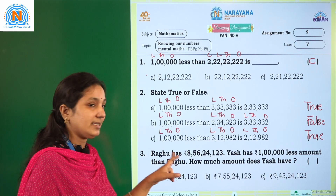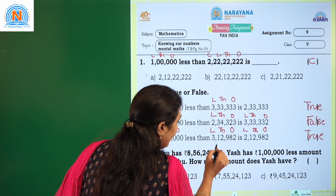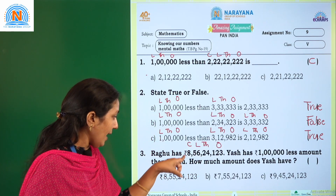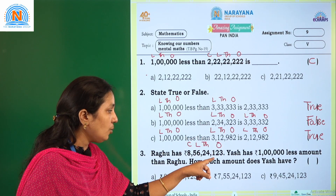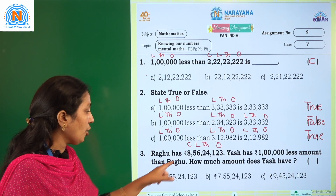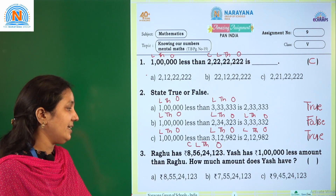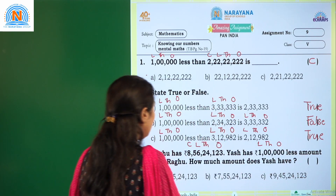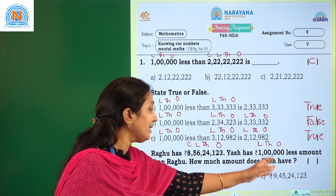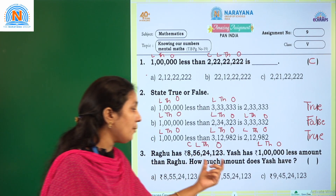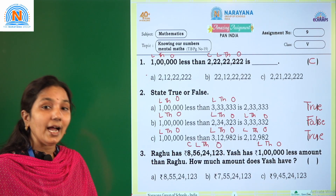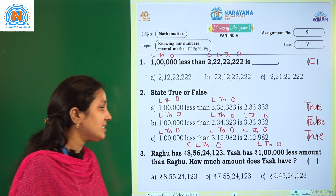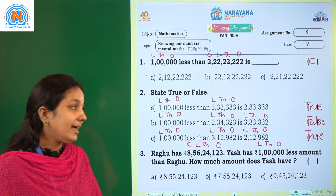Coming to the next one. Rabu has 8 crore 56,24,123. Ash has 1 lakh less amount than Rabu. How much amount does Ash have? So we have to take away 1 lakh from Rabu's amount of 8 crore 56 lakh 24,123.